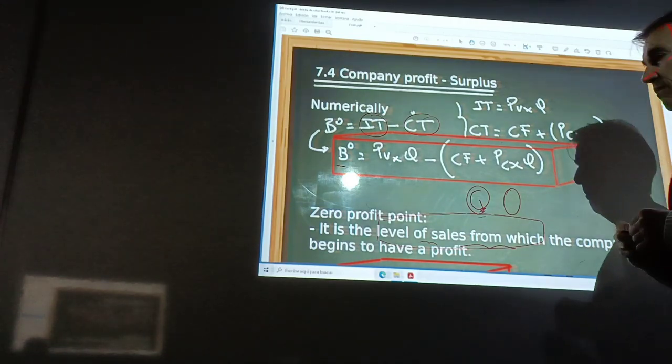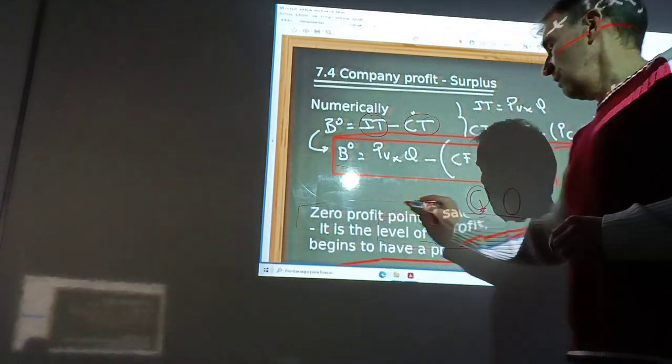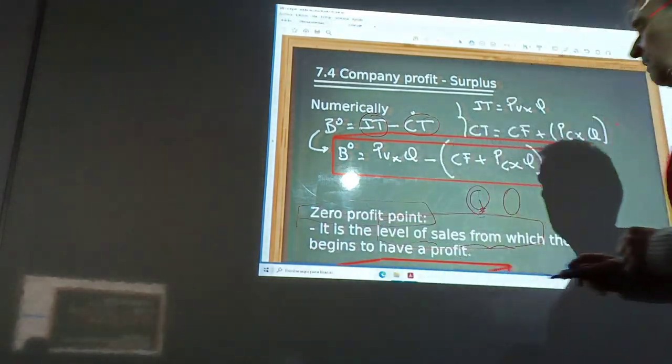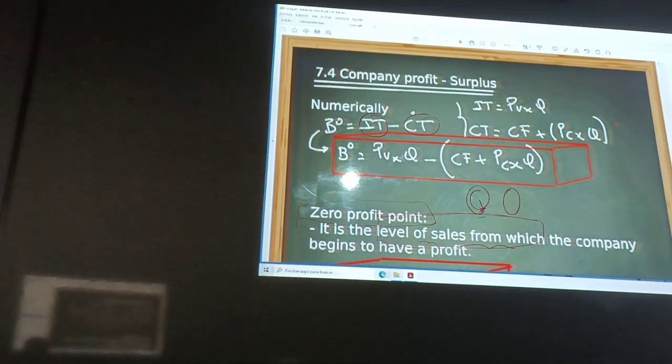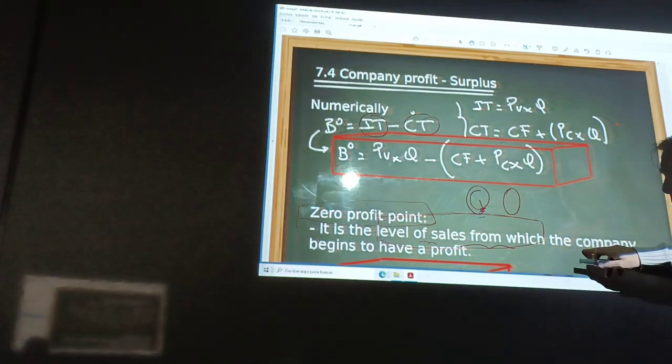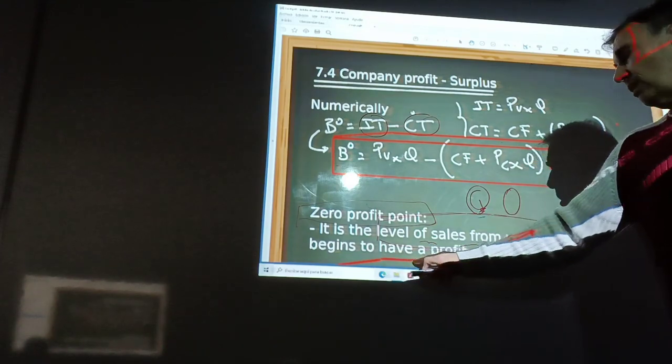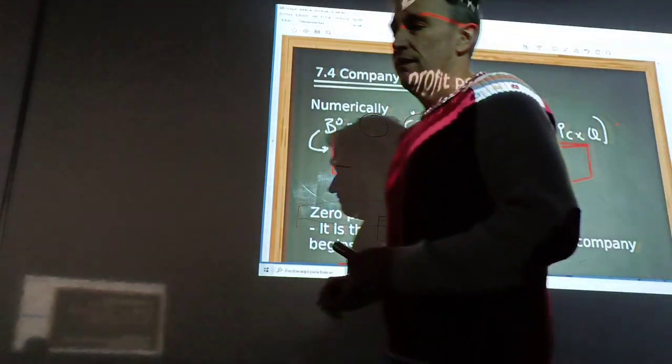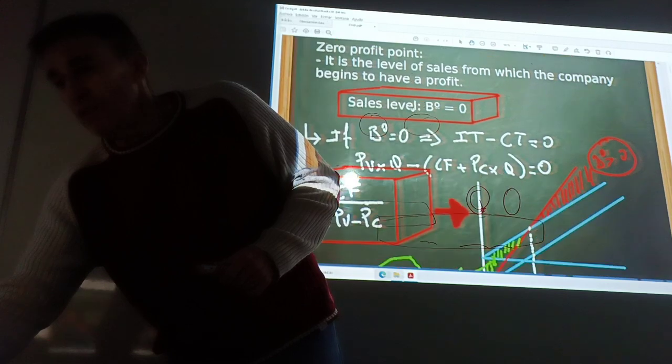Surplus is the relation between revenue or income and total cost. And finally, we could speak about the zero profit point. It is the level of sales from which the company begins to have a profit. And graphically, is this situation.